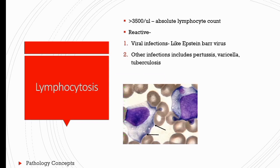Lymphocytosis: when absolute lymphocyte count is more than 3,500 per microliter, it is called lymphocytosis. When lymphocytosis is accompanied by WBC count more than 10,000 per microliter, it is called lymphocytic leukocytosis. The reactive cause of lymphocytosis is mainly viral infection — for example, Epstein-Barr virus, also called infectious mononucleosis. The peripheral blood shows lymphocytosis, and on smear we can detect large reactive atypical lymphocytes with pale blue, abundant cytoplasm and deeply basophilic rims.